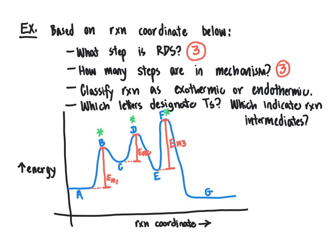To classify the reaction as exothermic or endothermic, we compare the relative energy of our starting material (point A) to the energy of our product (point G). If the energy of the product is lower than the energy of the reactant, the reaction is exothermic; if G is greater than A, it's endothermic. This one is definitely exothermic because the energy at the very end of the pathway is less than the energy at the beginning. For transition states: these are the energy maxima, the mountaintops — and those correspond to points B, D, and F on the curve.